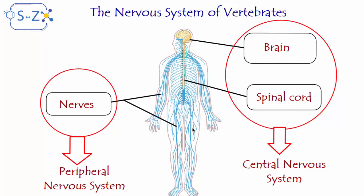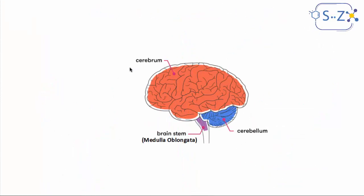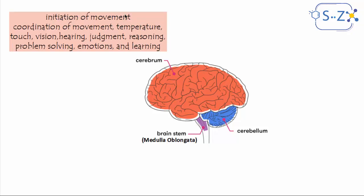The nerves constitute the peripheral nervous system, whose function is only to transmit nervous messages. Now, looking at the brain of vertebrates, especially humans, it is made of three main parts: the cerebrum, which is the biggest part of the brain; the cerebellum, which is smaller than the cerebrum; and finally the brain stem or medulla oblongata, which is the link between the brain and the spinal cord. The cerebrum is mainly responsible for initiation of movement, coordination of movement, controlling temperature, touch, vision, hearing, judgment, reasoning, problem solving, emotions, and learning.